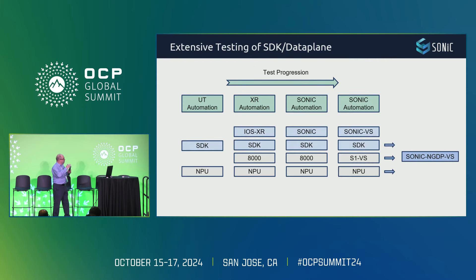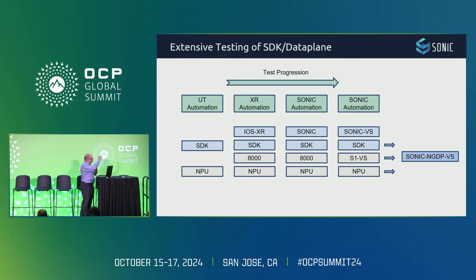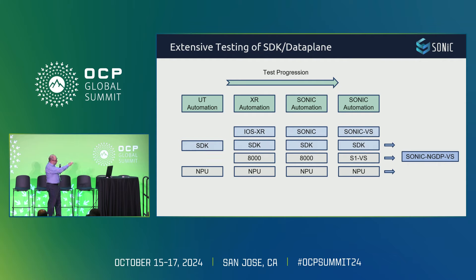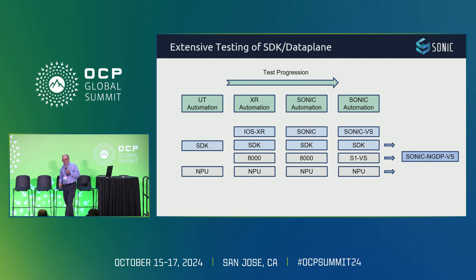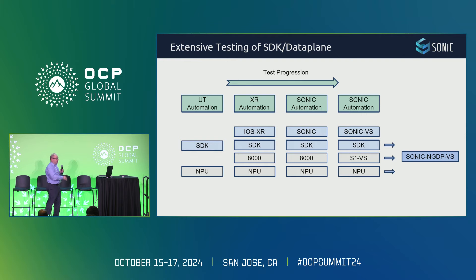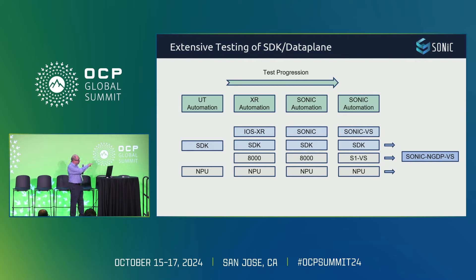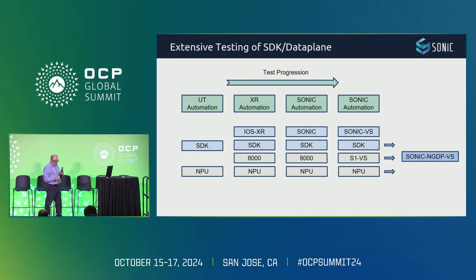As far as testing — I want to show you how much testing it goes through before you get it. On the far left, we do SDK development and NPU development using the simulator with UT automation. Then we build the 8000 chassis in multiple form factors, integrate the NPU, SDK, and XR, and do a significant amount of testing. We then repeat that exercise using the Sonic Test Framework with the same engine — Cisco 8000 hardware, but Sonic OS on top. Finally, we swap out the chassis to a simpler chassis but still reuse the same NPU SDK, run Sonic management on top, and then you get the TAR file.